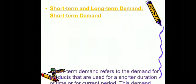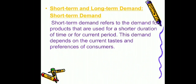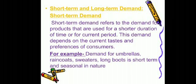Short-term and long-term demand. Short-term demand refers to the demand for products that are used for a shorter duration or for the current period. Short-term demand is the demand for products we use for a short time or need right now in the current period, and this demand depends on our current tastes and preferences. For example, during the rainy season demand for umbrellas and raincoats increases — that is short-term demand, meaning as long as the rainy season lasts, demand for these will remain. Similarly, as winter approaches, demand for sweaters will increase.